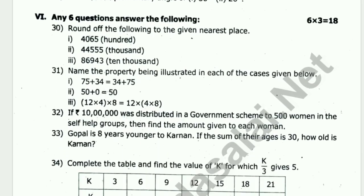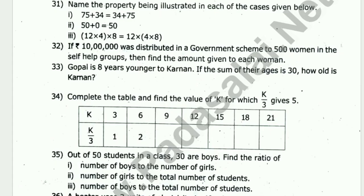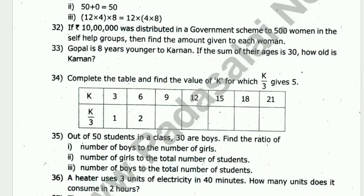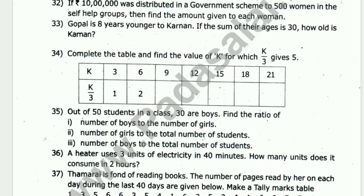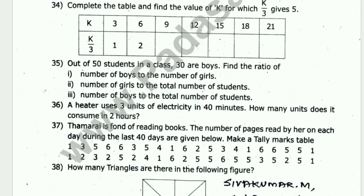Round the following to the given nearest place — questions 31, 32, 33, 34, 35, 36. Name the property being illustrated in each of the cases below. A heater uses 3 units of electricity in 40 minutes. How many units does it consume in 2 hours?